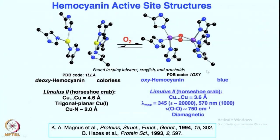This oxyhemocyanin gives a blue color and is very characteristic of this sort of species, both in the UV-visible spectra and resonance Raman spectra. The EPR spectra shows the diamagnetic structure, and the crystal structure clearly shows that it is a side-on bound peroxo species. Both coppers are binding with both oxygens equivalently. These are very distinct copper-oxygen species formations.